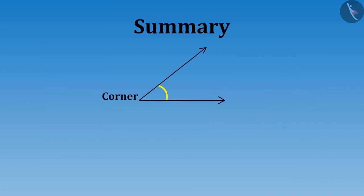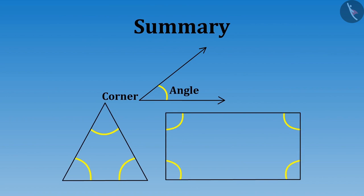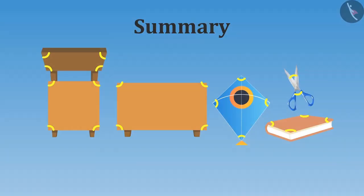In this video, we have learned about corners, angles formed in them and the angles formed in closed figures. Did you observe that the angles in figures identified by Meena and Riva are closed figures, just like this triangle and rectangle?